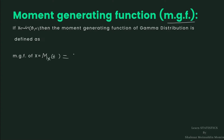M_x(t) is the expected value of e raised to tx. Since x is a continuous random variable, we calculate the expectation of e raised to tx by integration from minus infinity to infinity of e raised to tx into f(x) dx, where f(x) is the PDF of the corresponding distribution.